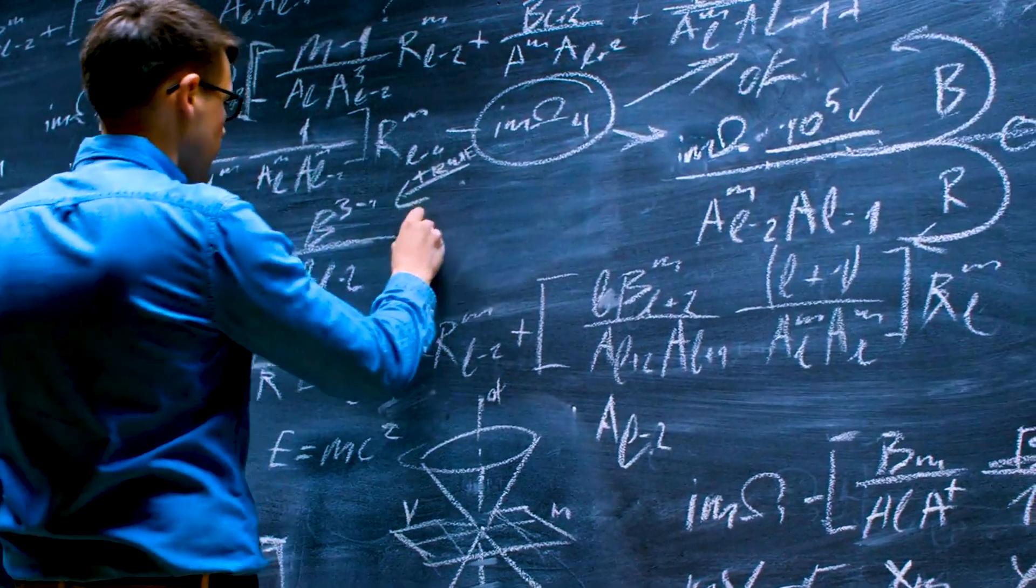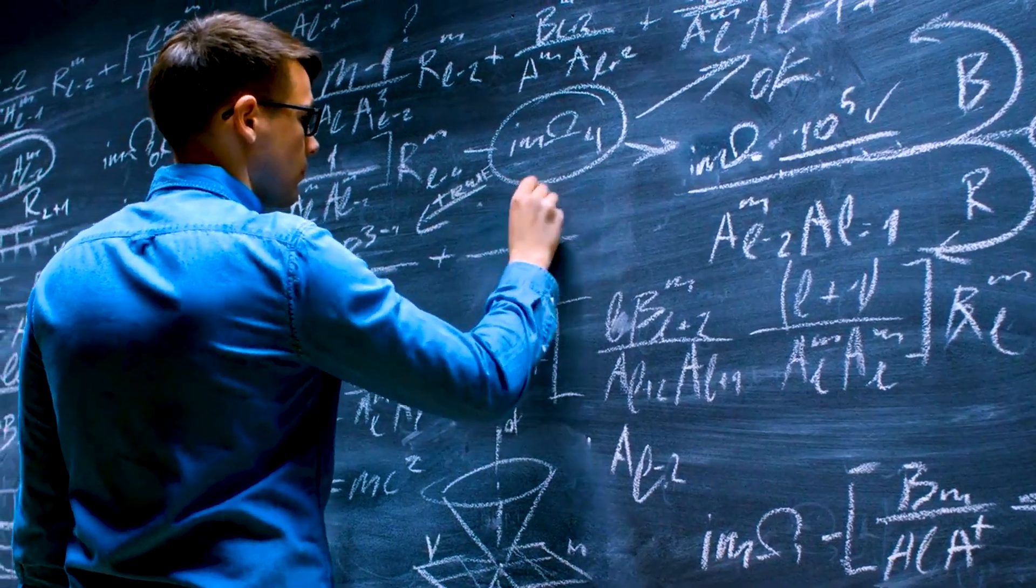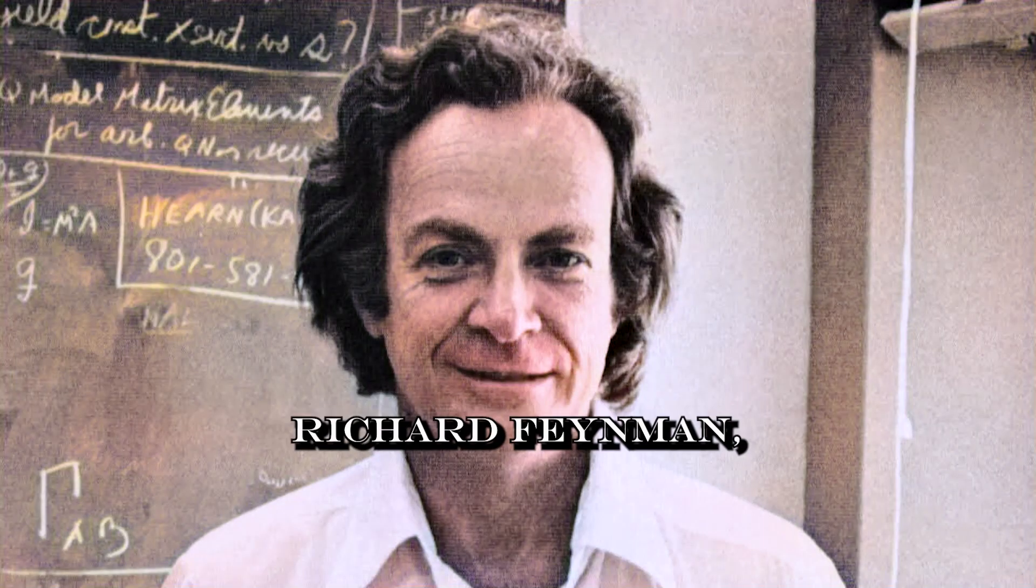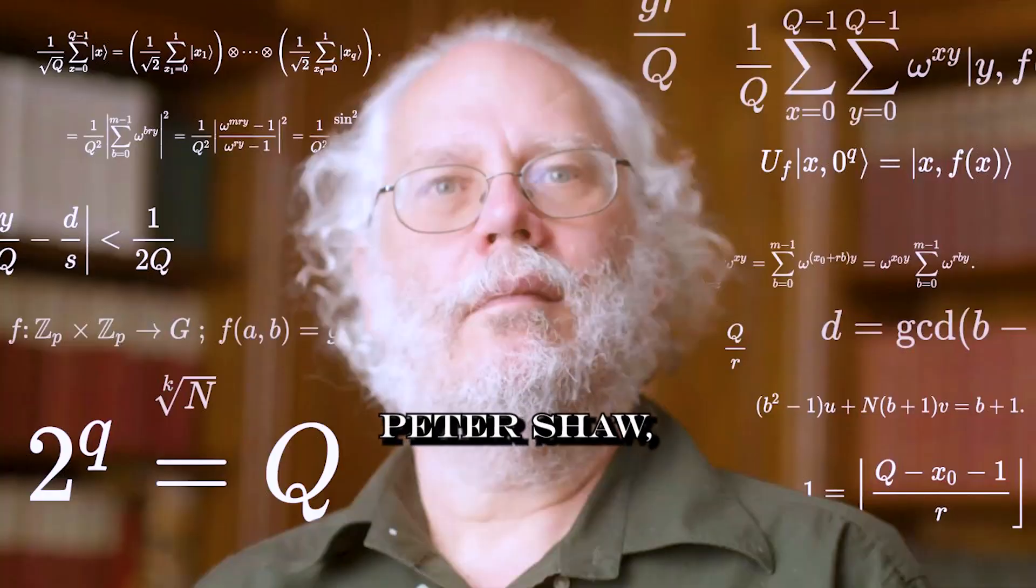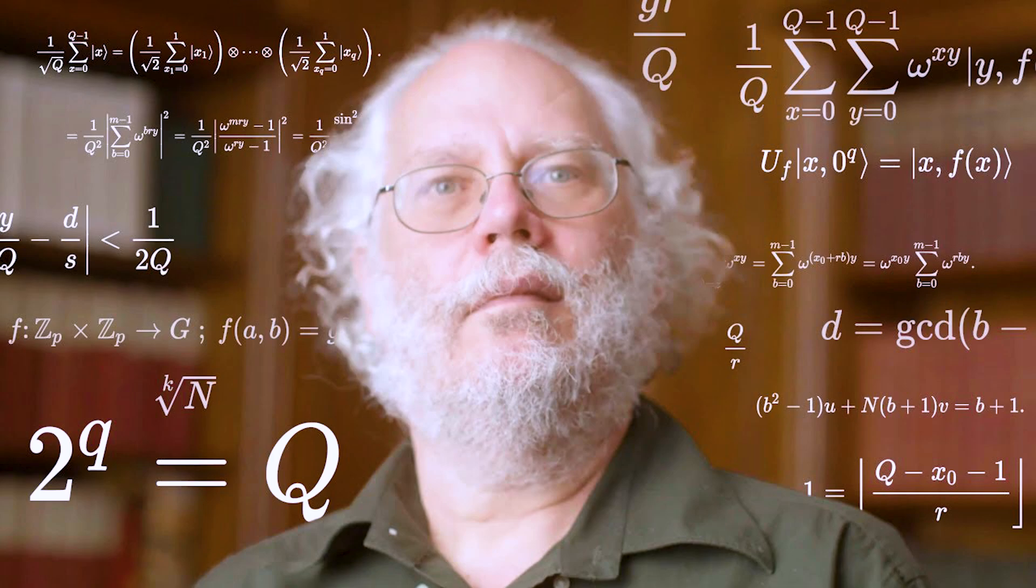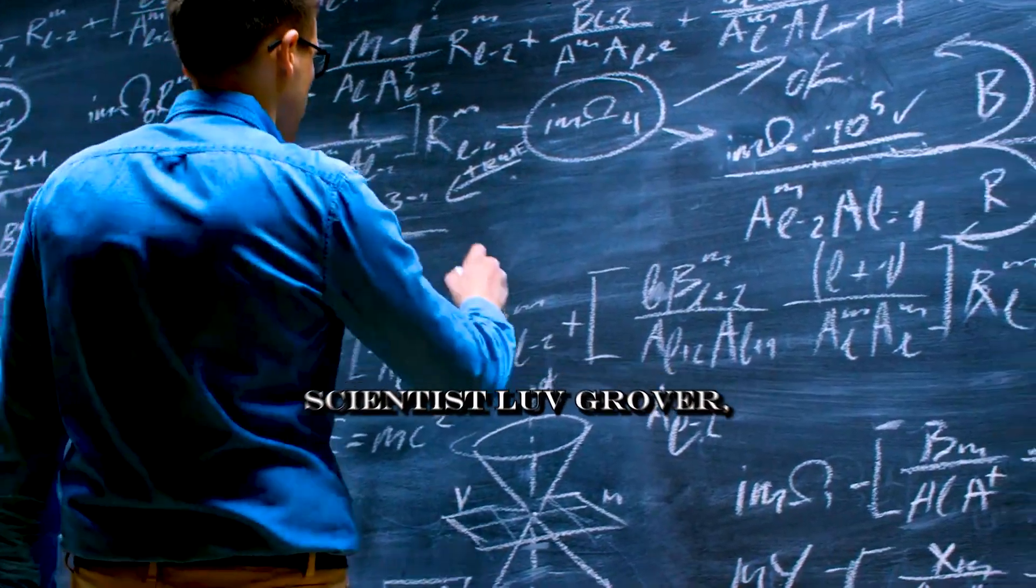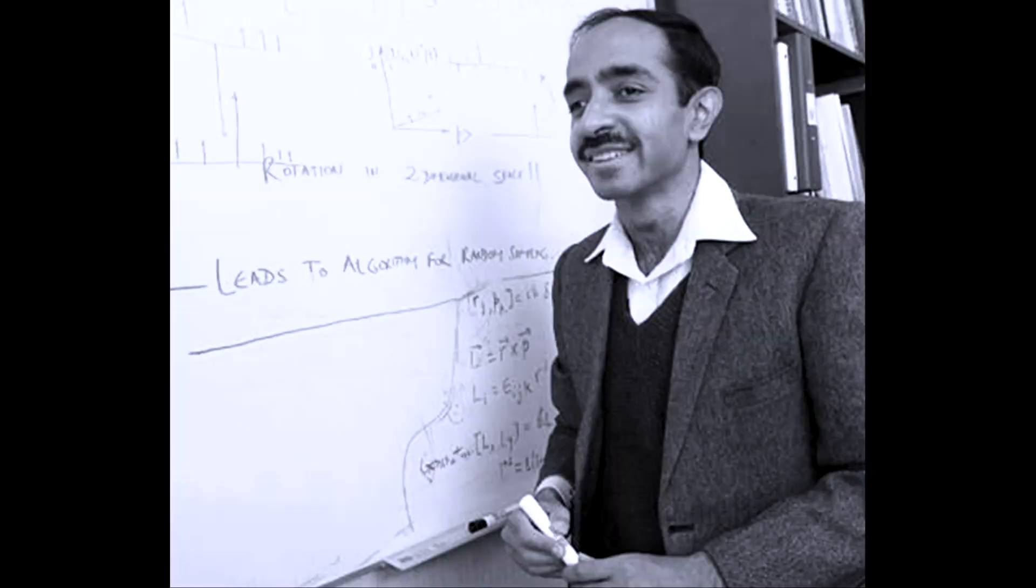Some pioneering figures behind quantum computing include physicist Richard Feynman, who first proposed the idea in 1982, mathematician Peter Shor, who developed a quantum algorithm for prime factoring in 1994, and computer scientist Lov Grover, who created an algorithm for database search in 1996.